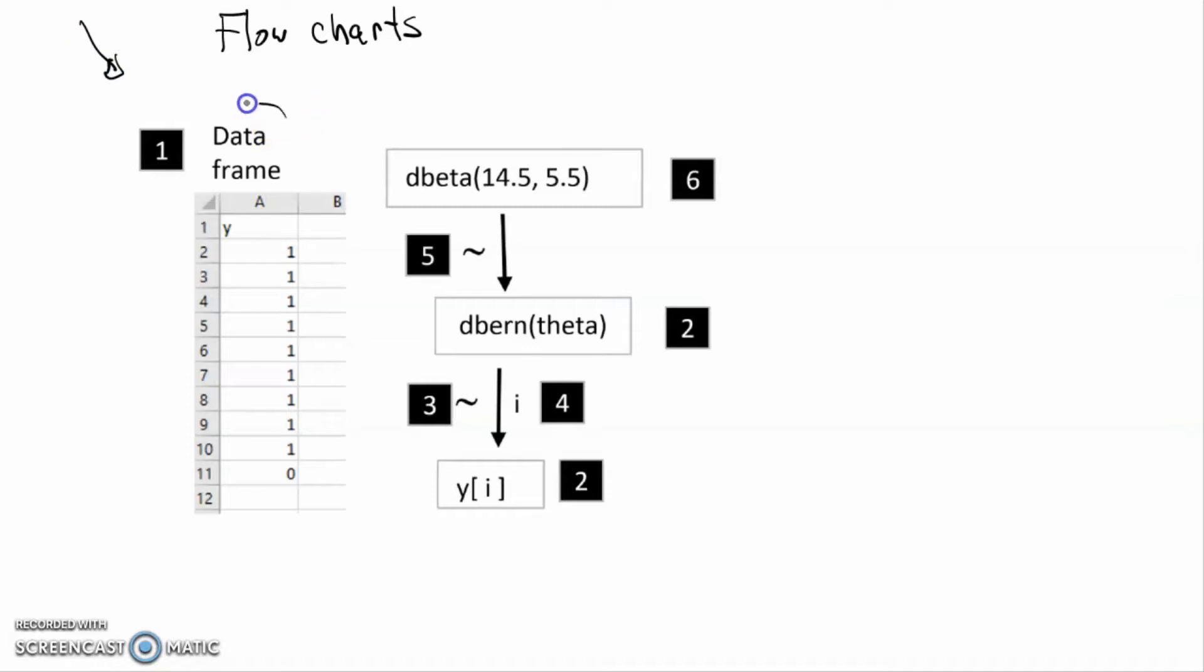We begin with the data, the data frame. Here we can see it set up in the Excel spreadsheet. We've got only a single variable Y, and the value of Y is either going to be a 1 or a 0. This is just a study on whether or not people are right or left-handed.